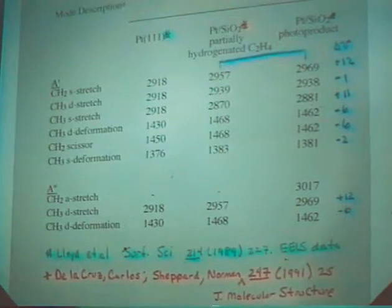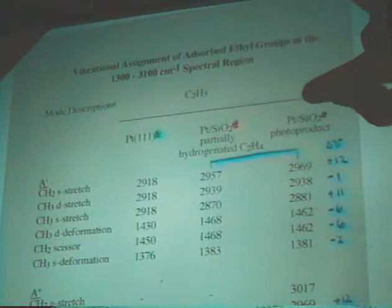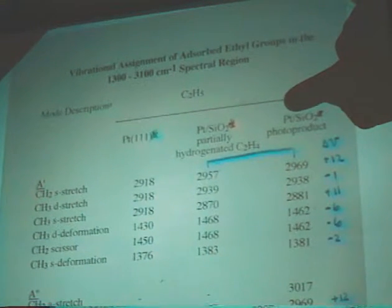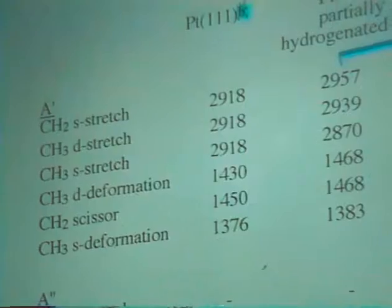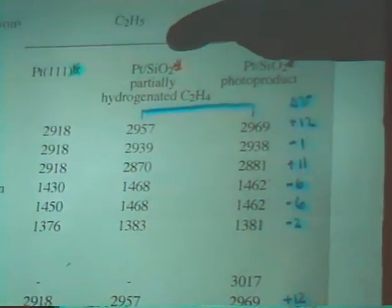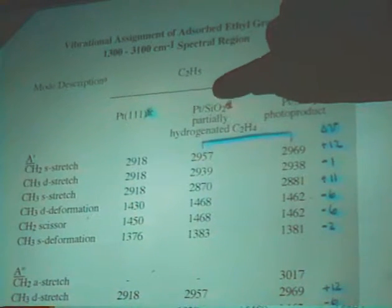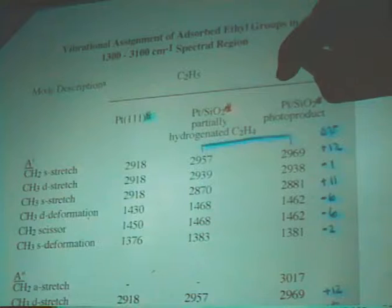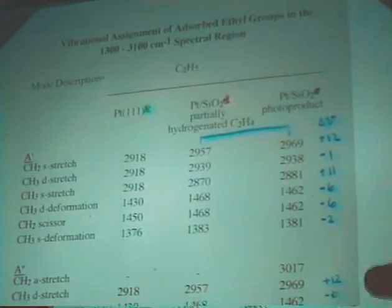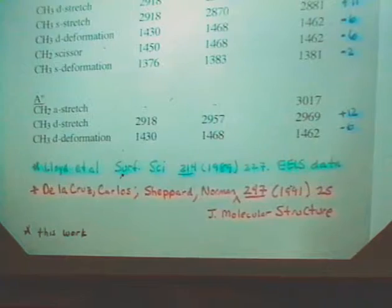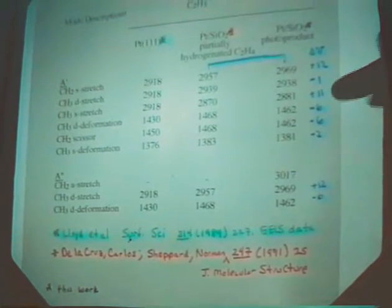So what's our evidence for ethyl groups on the surface? Our evidence is the infrared data that we have. Here what I have is the assignment of the ethyl groups formed from photolysis of ethyl chloride, and that's our work here in this column. I've compared that to the electron energy loss data obtained for ethyl groups absorbed on platinum-111, and more importantly, we see ethyl groups formation on platinum silica from partially hydrogenating ethylene, and that's the work of Professor Shepard. We see that the agreement between our bands and Professor Shepard's bands are quite good. We feel like we have good evidence that we're forming these ethyl groups on the surface.